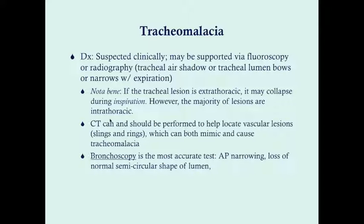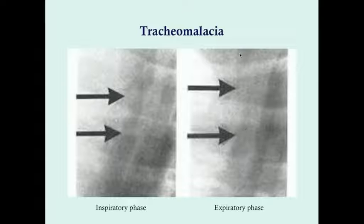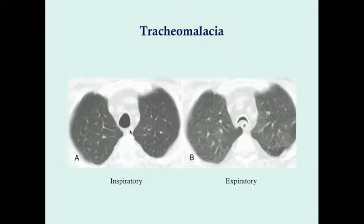A CT exam should be performed once tracheomalacia is suspected — it's excellent for identifying vascular lesions and confirming the diagnosis. The most accurate test is bronchoscopy, where you'll see anteroposterior narrowing and loss of the semi-circular shape of the lumen. On X-ray examples, you can see collapse of the tracheal air shadow during expiration. On CT, the inspiratory phase appears normal while the expiratory phase shows tracheal collapse.